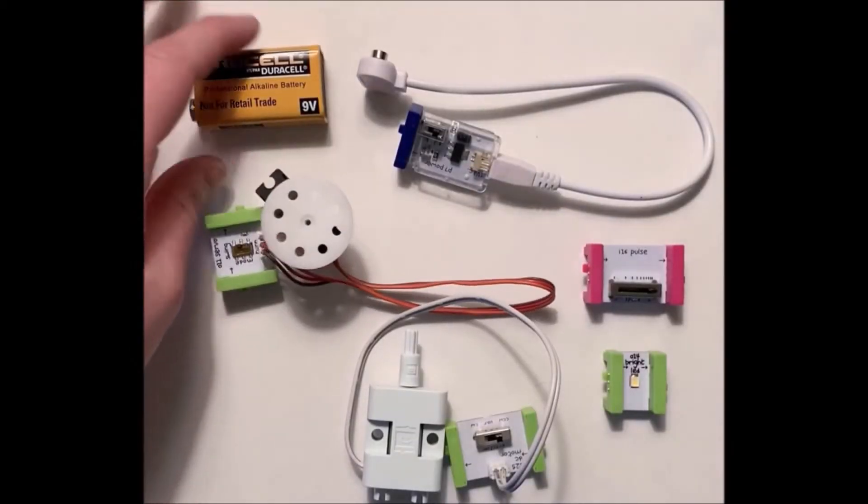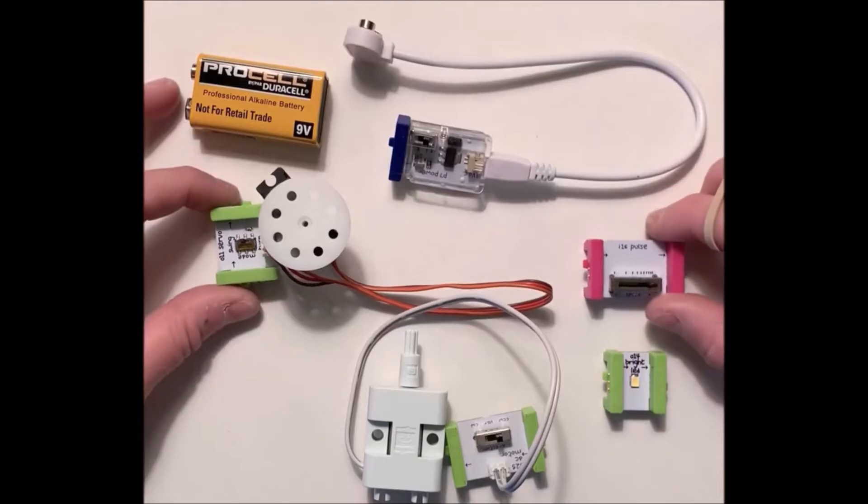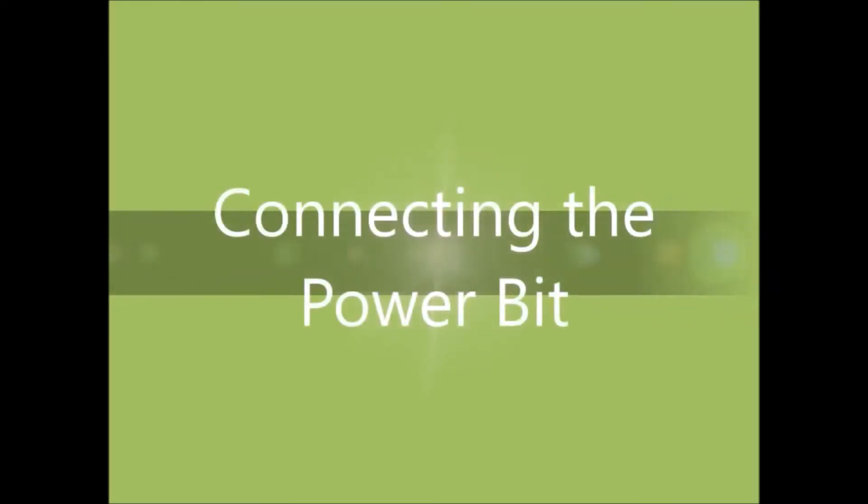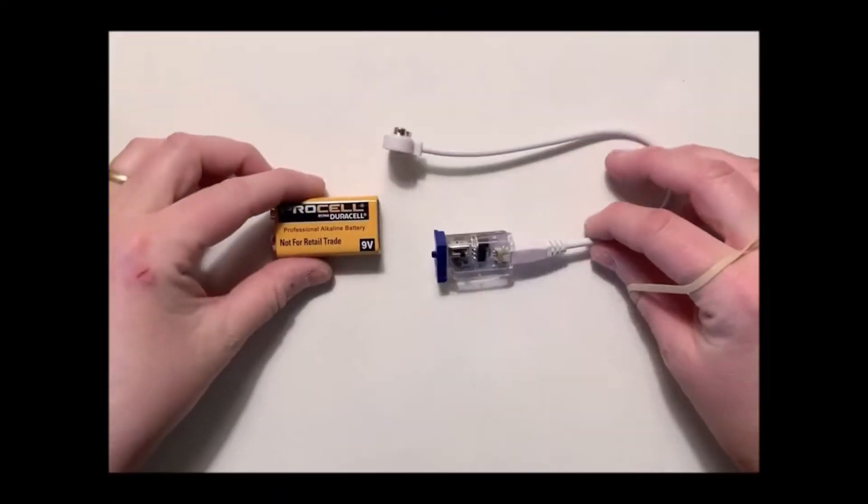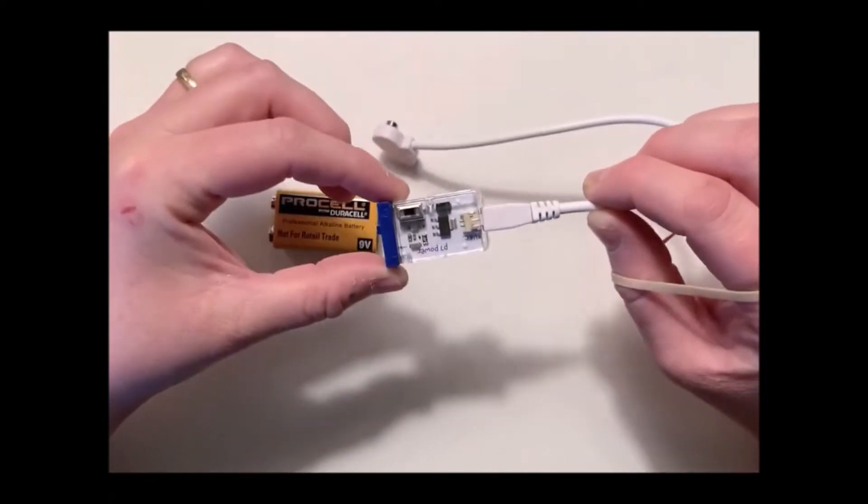Hey guys, today I'm going to show you how to make electric circuits using Little Bits electronic building blocks. The first thing we need to do is hook up the power. This bit right here is called the power bit and the end of it hooks up to a 9-volt battery.